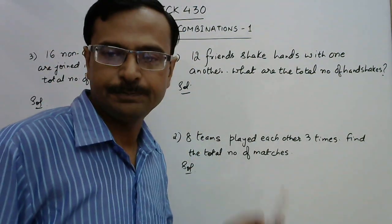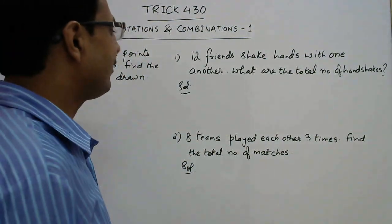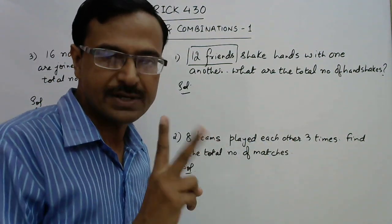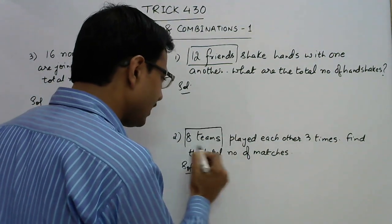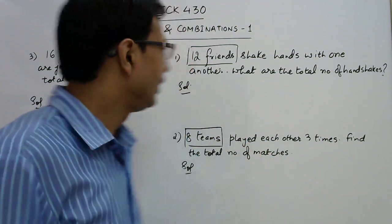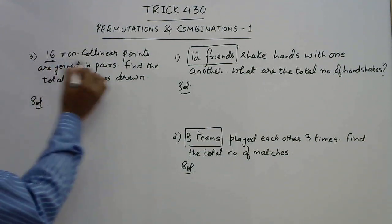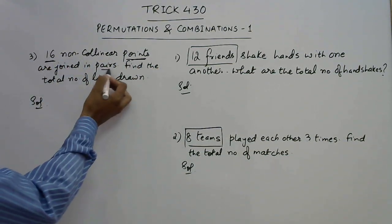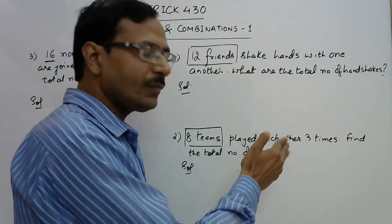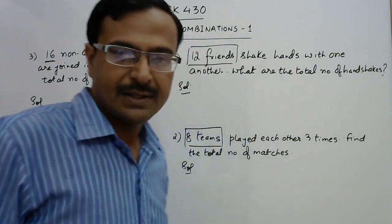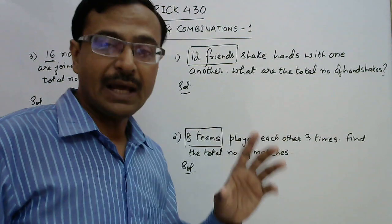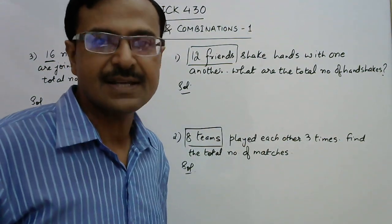Now let's see the questions on the board. In the first question, there are 12 friends shaking hands with each other, so the event happens between two persons. In the second question, 8 teams are playing with each other, and a match happens between two teams at a time. In the third, there are 16 points joined in pairs. So whether it's a handshake, a match, or joining two points, the total number of times the event happens can be calculated in just three seconds using this shortcut.